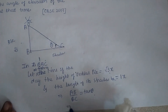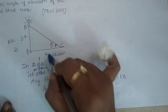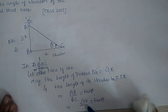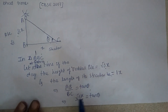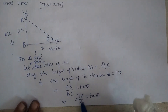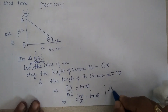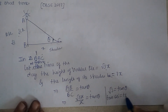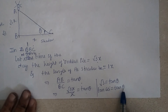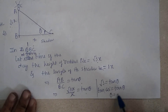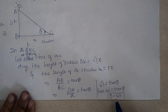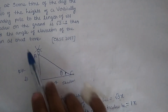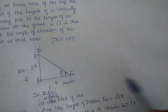AB is root three x and BC is x, so root three x upon x equals tan theta, giving root three equals tan theta. The value of tan 60 degrees is root three, so tan 60 equals tan theta, which means theta equals 60 degrees. Therefore the angle of elevation of the sun at that time is 60 degrees.